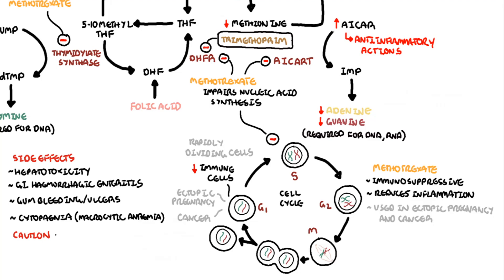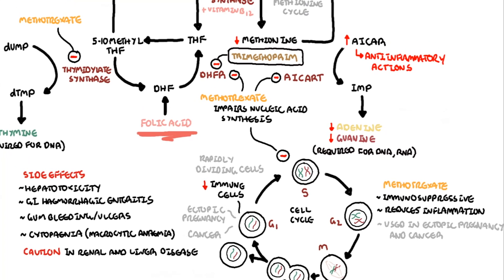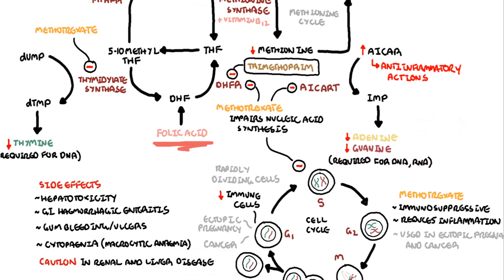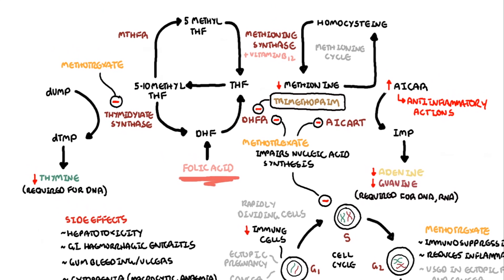Caution: methotrexate should be avoided in renal and liver disease. Due to its inhibitory effects on nucleotide synthesis, methotrexate can be toxic to normal cells, and therefore folic acid supplementation is recommended. Folic acid is preferentially taken up by normal cells, minimizing methotrexate toxicity while preserving its efficacy.